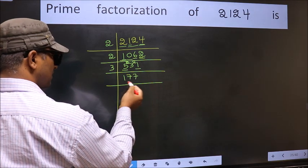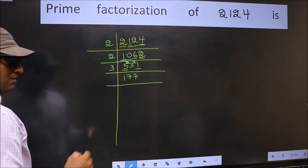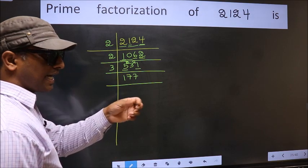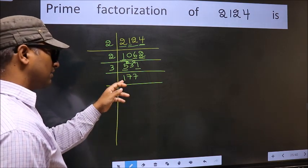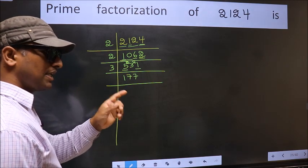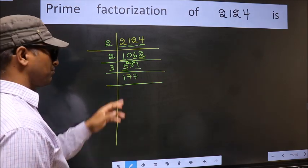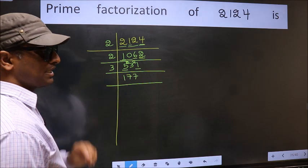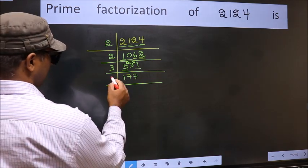Now to check whether this is divisible by 3 or not, add the digits: 1 plus 7 plus 7 equals 15, and 15 is divisible by 3, so this number is also divisible by 3. So take 3 here.